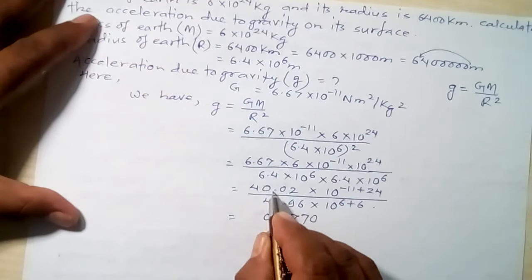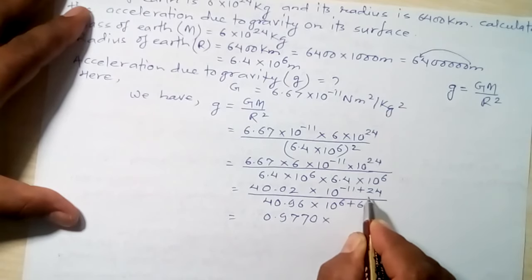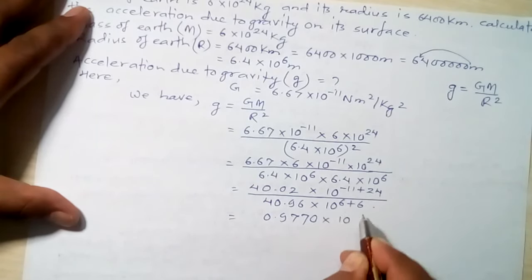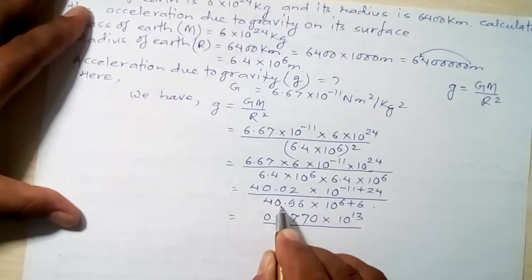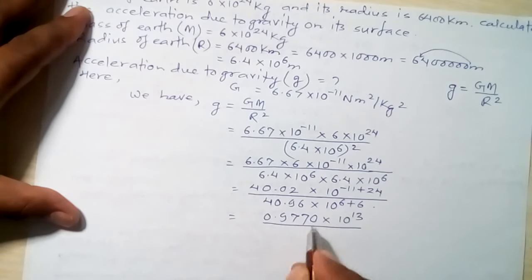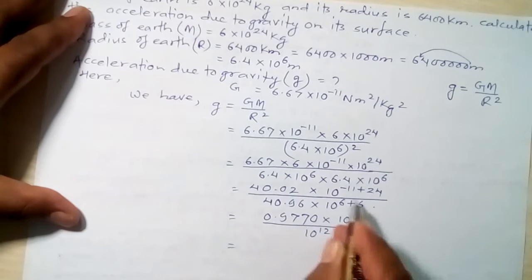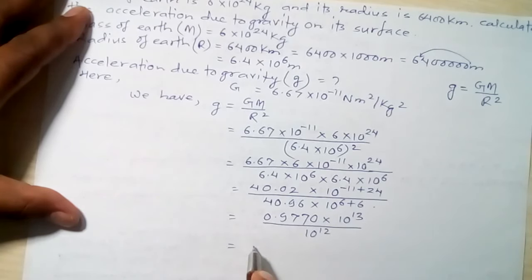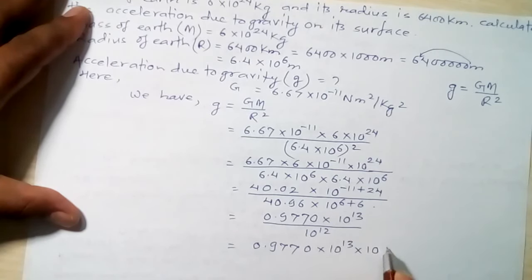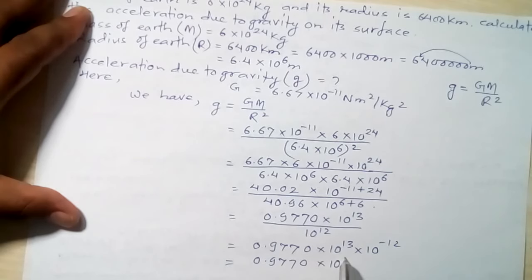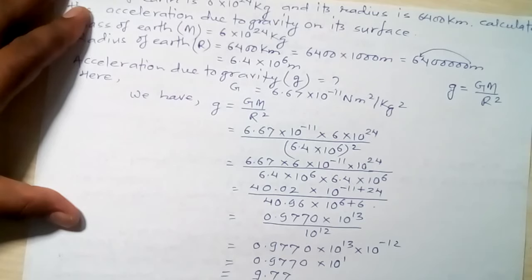For the powers of 10: 10¹¹⁺²⁴ = 10¹³ in the numerator, divided by 10¹² in the denominator gives 10¹. So we have 0.9770 × 10¹, which equals 9.77. After two digits the remaining zeros can be ignored.